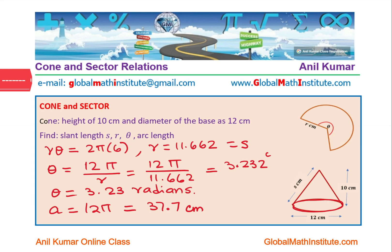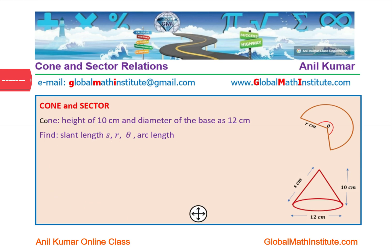So we have all our answers, with units for length in centimeters. That is how we are going to answer this particular question. It is important to understand that when we talk about a sector and a cone, the relation is that the circumference of the base is same as the arc length, and the radius is same as the slant height.